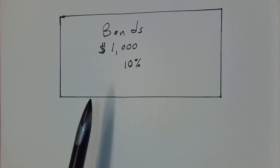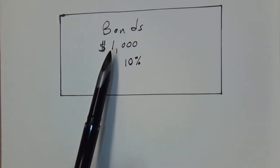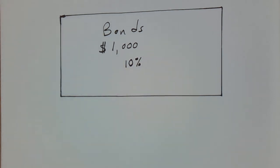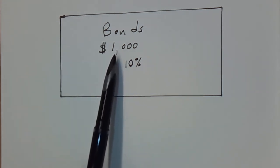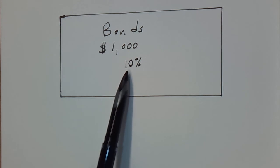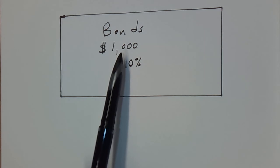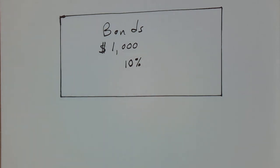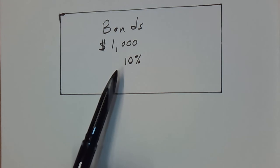The way to induce investors to lend the money to the company, or in some cases a governmental entity, in $1,000 increments, is this promise of 10% return. In other words, over the life of the bond, the investor would receive 10% interest on their money, plus at the end, which is known as the maturity date, they would receive their $1,000 back.